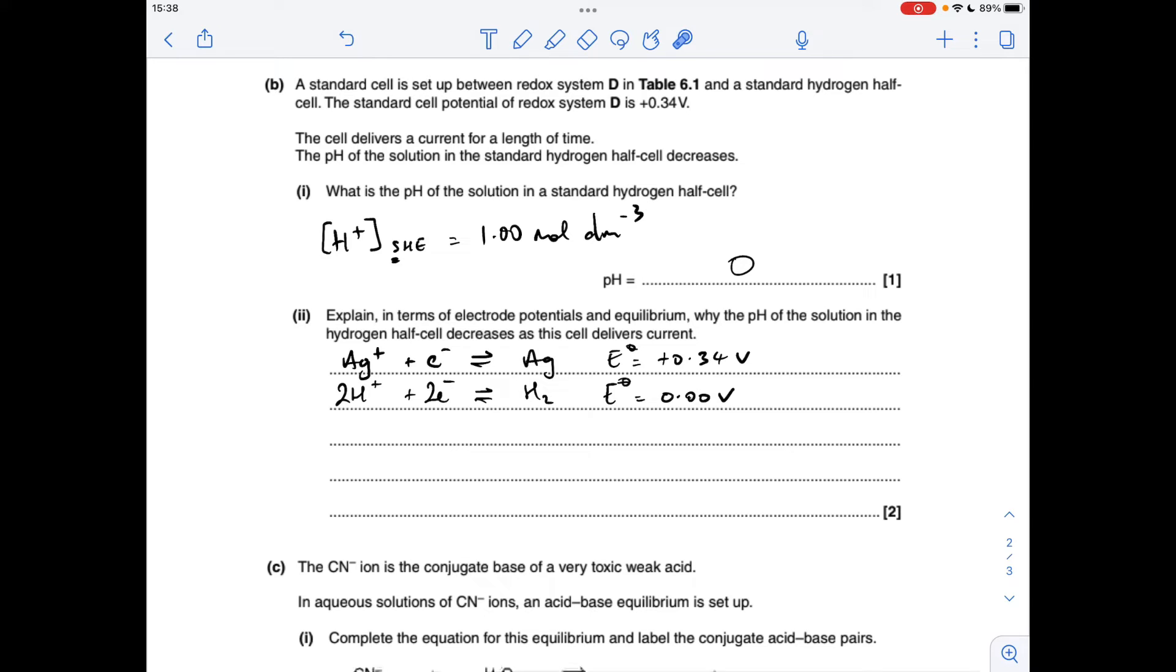So if we think about how these half equations are going to run, this is the more positive one, so it's going to run left to right, which means that the hydrogen one is going to go backwards right to left, so it's producing H plus ions as the cell operates, which means that the pH is going to decrease because it's getting more acidic.